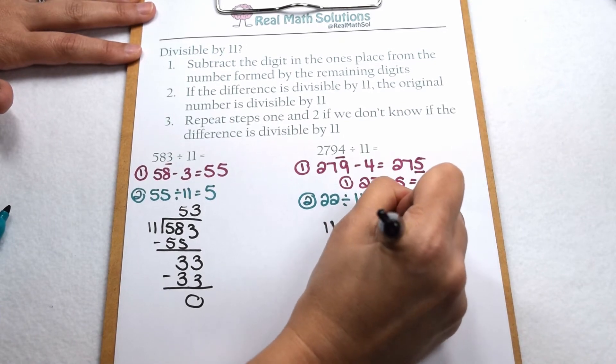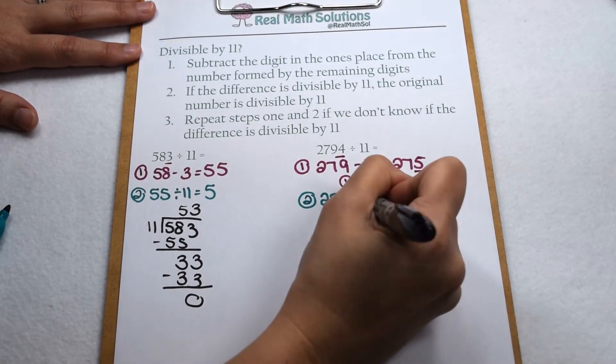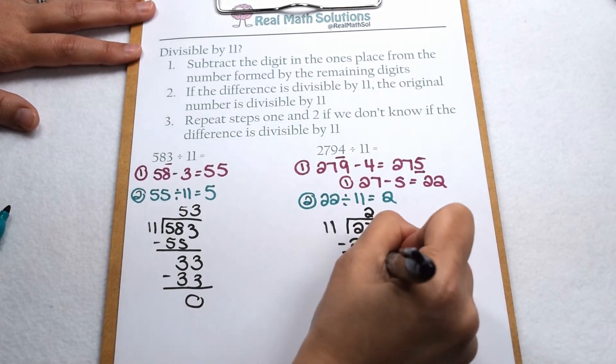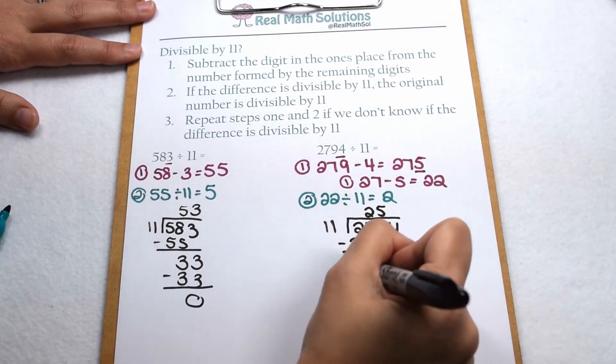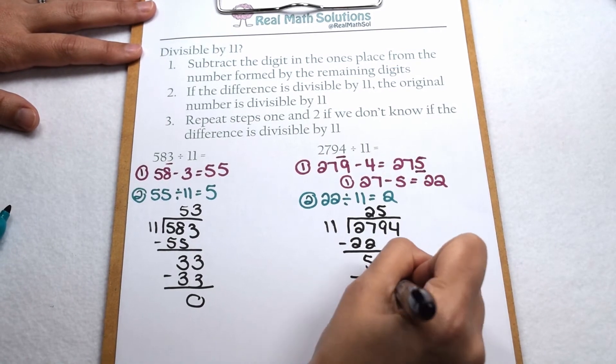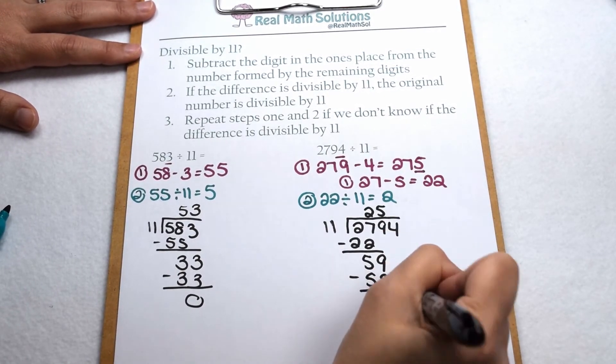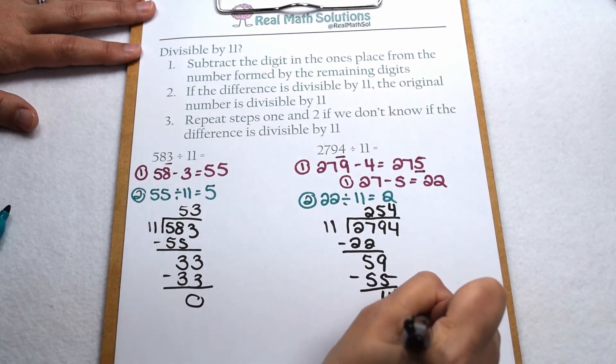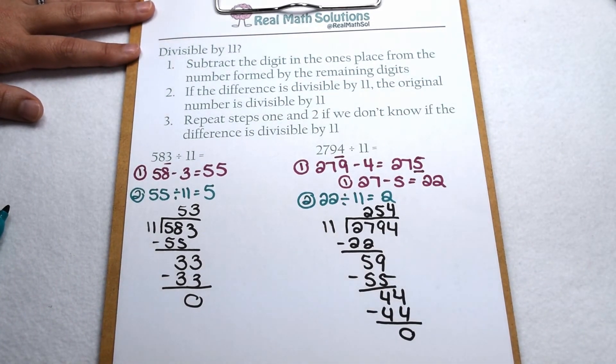If we solve it to test it out, I have 2794 divided by 11. 11 goes into 27 twice. That's 22. That leaves me with 5. Bring down my 9. 11 goes into 59 five times. That leaves me with 4. Bring down my other 4. 11 goes into 44 four times. And as predicted, we have no remainders. 2794 divided by 11 gives me 254.